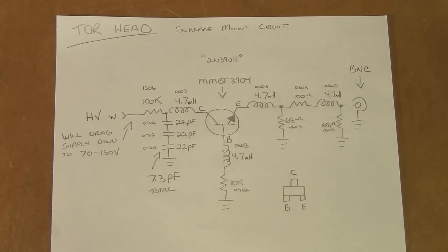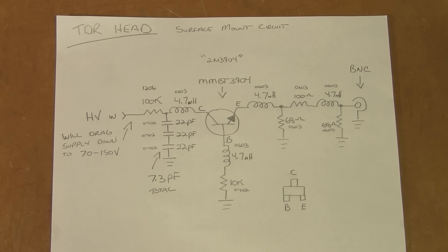Here we have the surface mount version of this TDR head. You can see there's a few circuit variations in this. And I had to add some components. The MMBT3904 is a surface mount version of the 2N3904. It's much smaller and there's a lot less lead on the MMBT3904. So I had to add some 4.7 nanohenry inductors in the leads of this transistor to mimic the through hole version 2N3904 and to mimic the inductance of the components attached to it like the peanut style resistors.